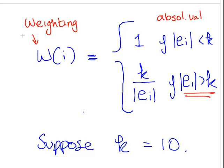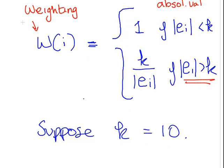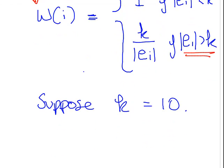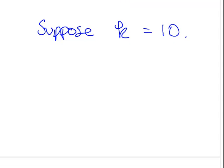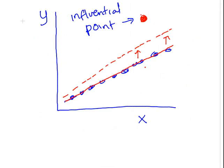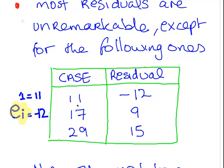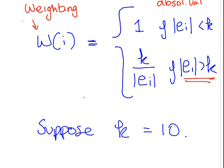Let's say for argument's sake in our example the tuning constant was 10. Let's go back to our three cases: minus 12, 9, and 15. Case 11, case 17, case 29, with residuals minus 12, 9, and 15.